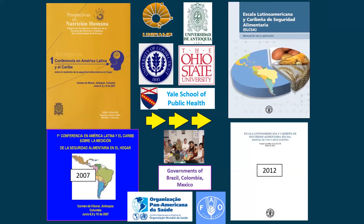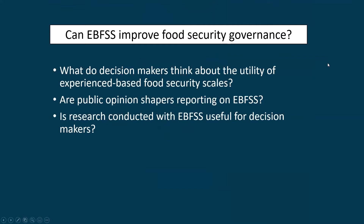This illustrates the major partnerships involved, and it took five years to go from the initial technical meeting in Medellín, Colombia, hosted by the University of Antioquia together with other U.S. universities, for ELCSA to finally have been published as the official measure for Latin America and the Caribbean by the FAO.